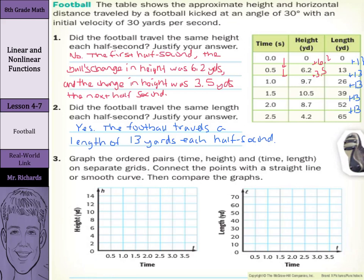Now we want to graph the ordered pairs with time and height on separate grids, connect the points with a straight line or smooth curve, then compare the graphs. Our first graph is labeled height. Our first point is (0, 0). Then half a second is 6.2, one second is 9.7, one and a half seconds is 10.5, two seconds is 8.7, and two and a half seconds is 4.2. So we can draw a smooth curve through these points.